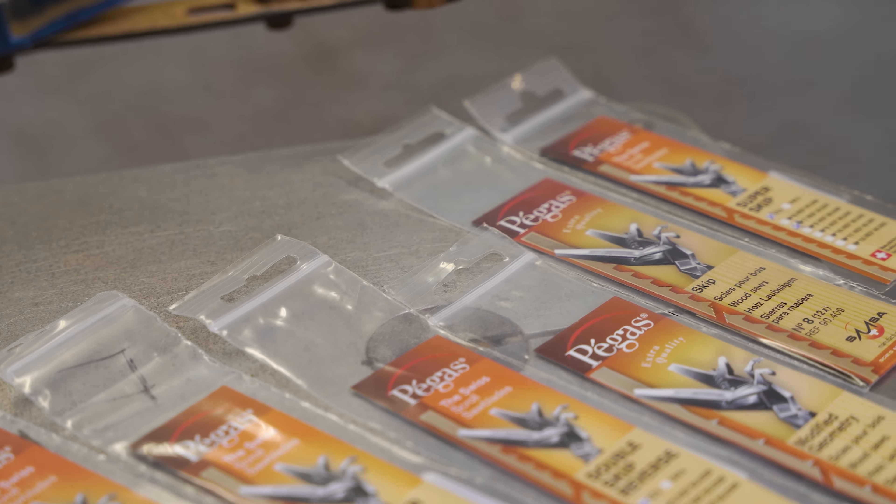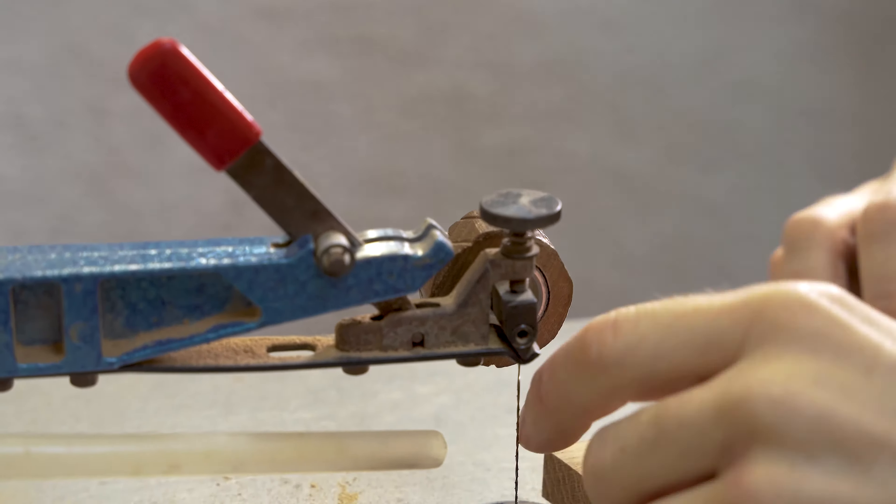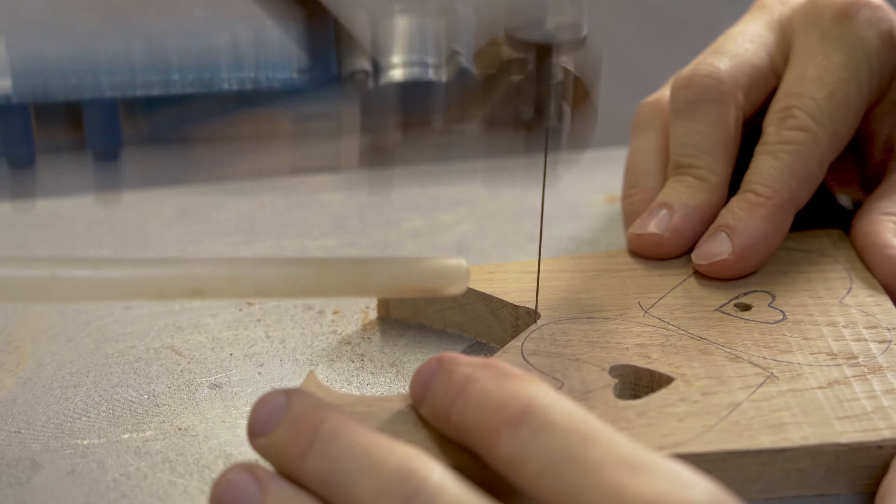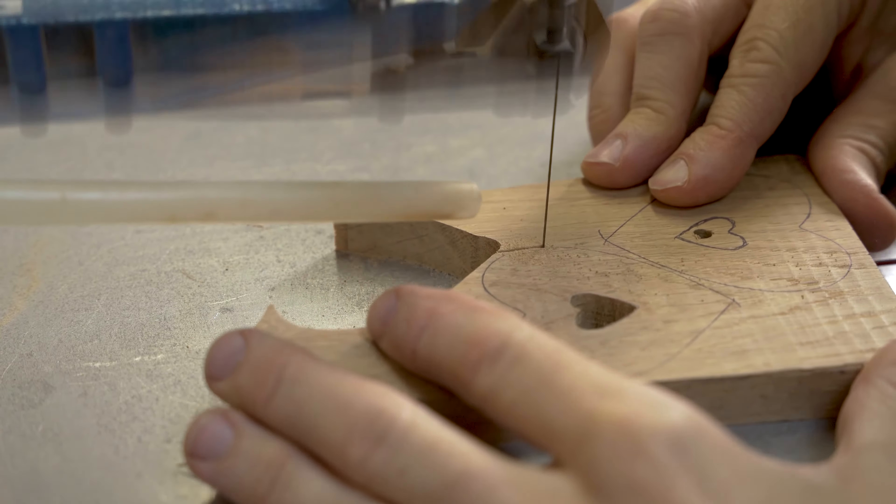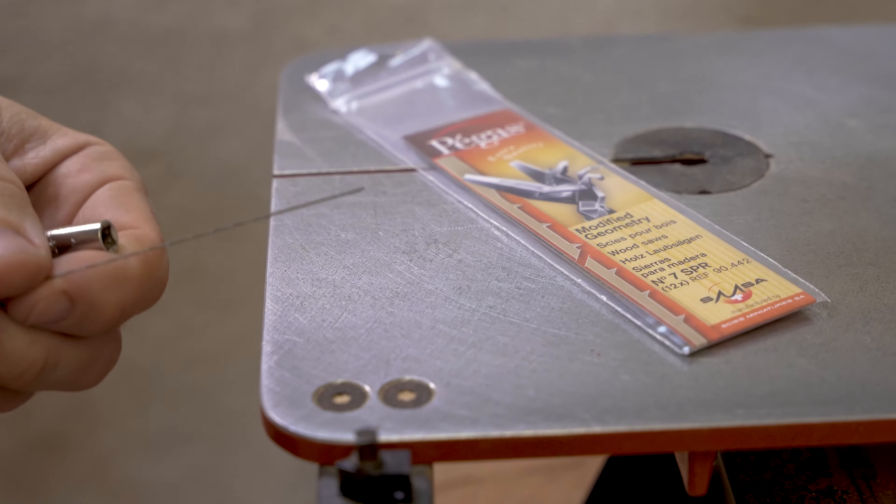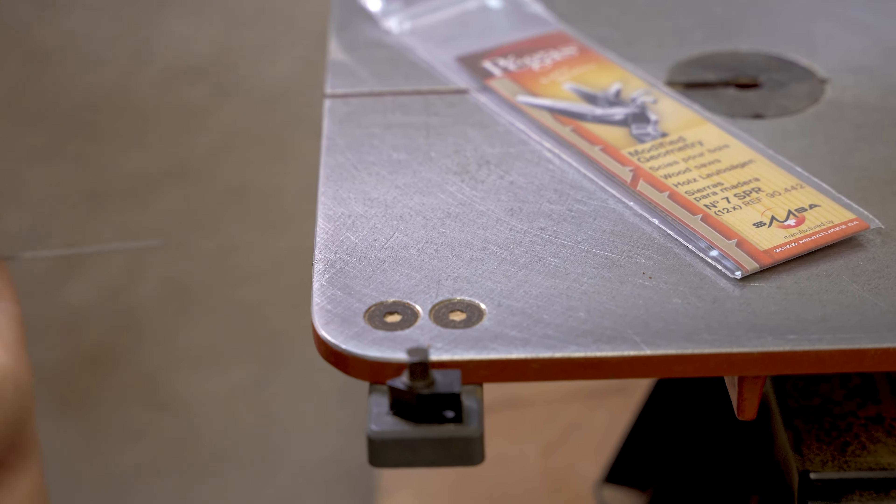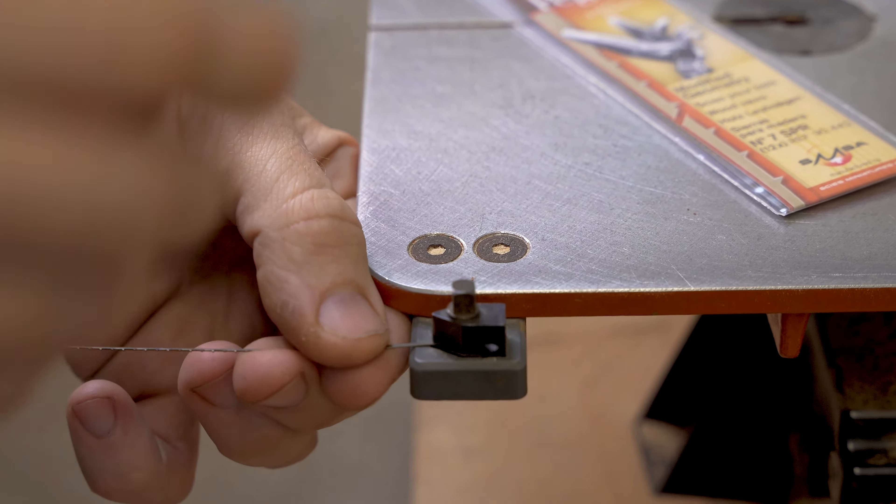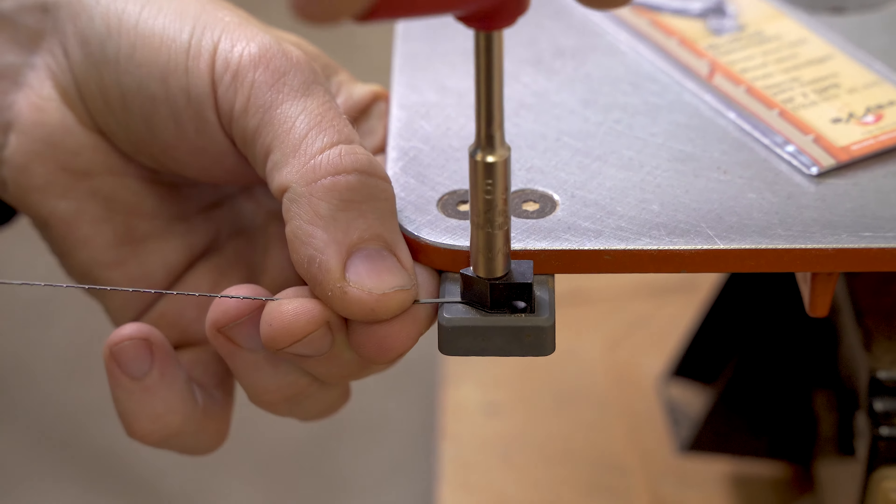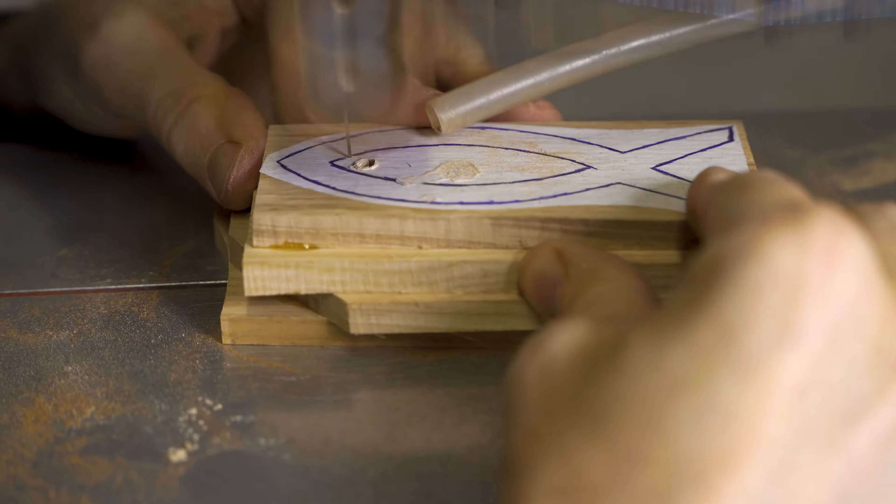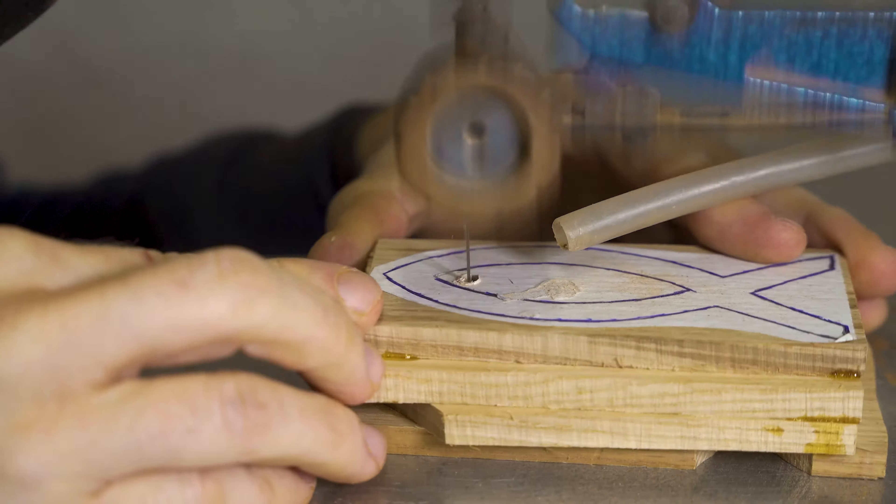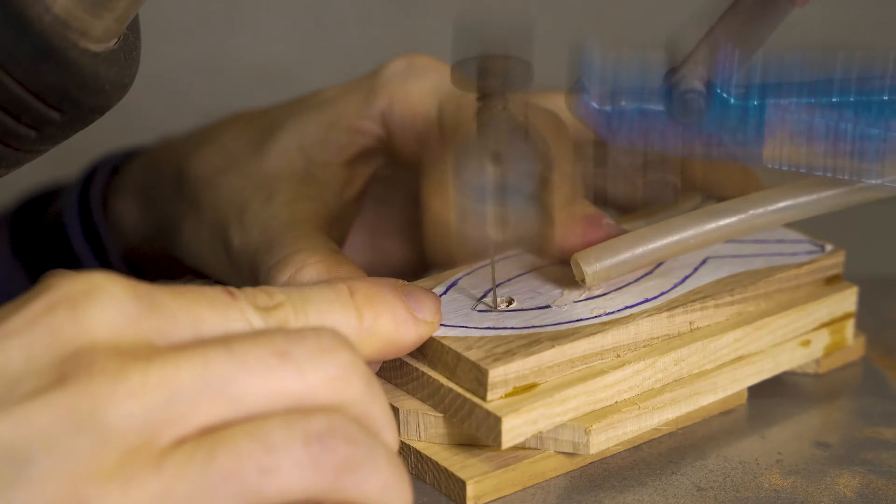Basically, they have something for everyone. So if you enjoy working with spiral blades, Pegas have an option available. You've got things like modified geometry, reverse tooth, standard tooth, skip tooth, hook, all sorts of different options.